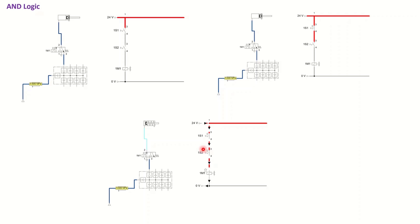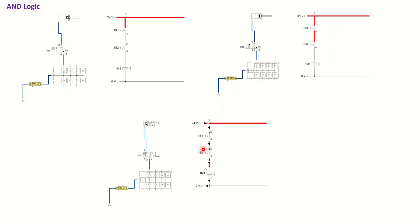If you look at twin pressure valve, it has kind of the same functionality — the same sort of principle. Twin pressure valve has two inlets and one outlet. Whenever we have air from both inlets, the system can provide air for the outlet. The same kind of thing is happening here because if 1S1 and 1S2 are in the ON condition at the same time, the system can operate and 1M1 will be energized. Also, if you watched the video on twin pressure valve, you can see we can use directional control valves in series in order to have AND logic — for instance a 3/2 directional control valve that we manually actuate, with both of them in series.